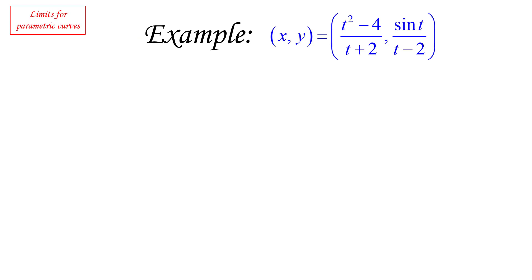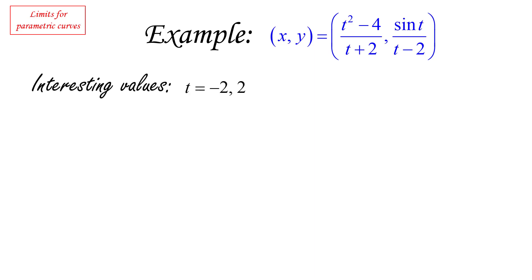Let's look at this particular parametric curve. The first thing we want to do is ask what are the values of t for which it seems worthwhile to compute a limit. Because both functions have denominators, we're going to check for when those denominators become zero. That gives us interesting values: t equal to negative two, where the first function becomes undefined, and t equal to two, where the second function is undefined.